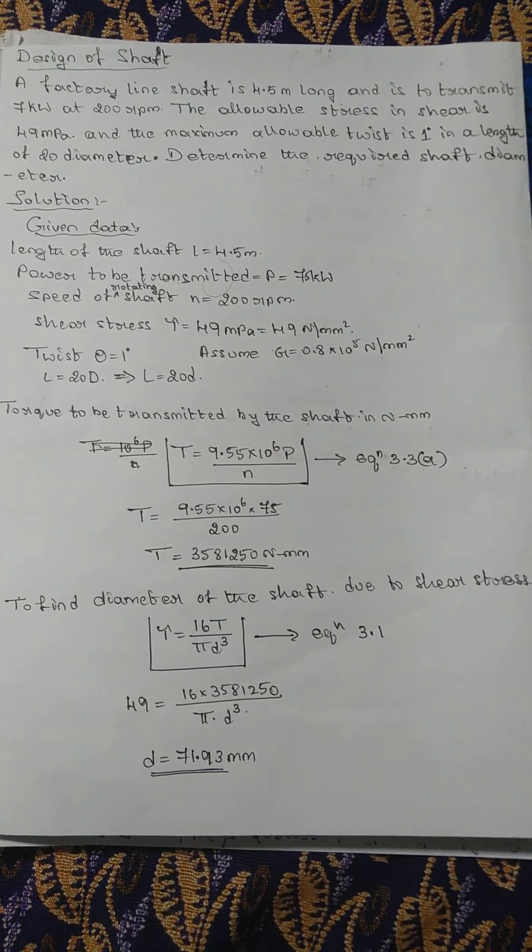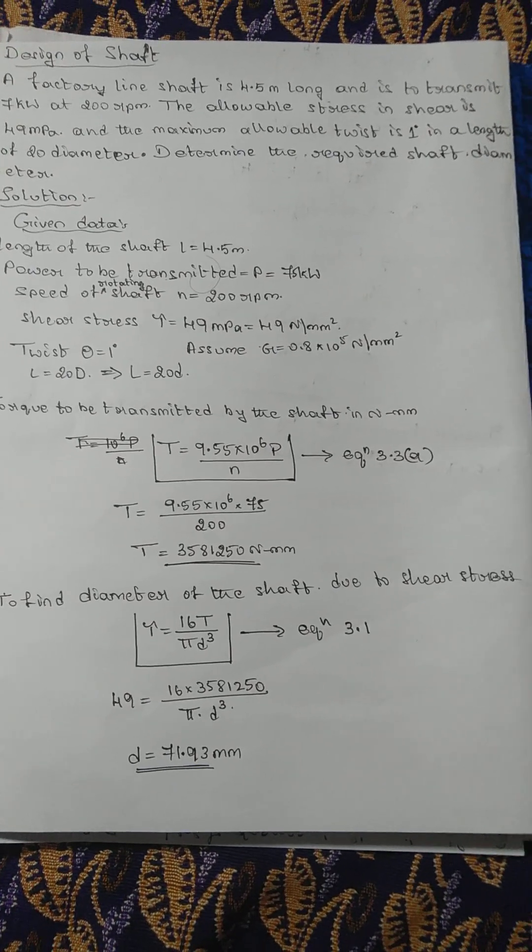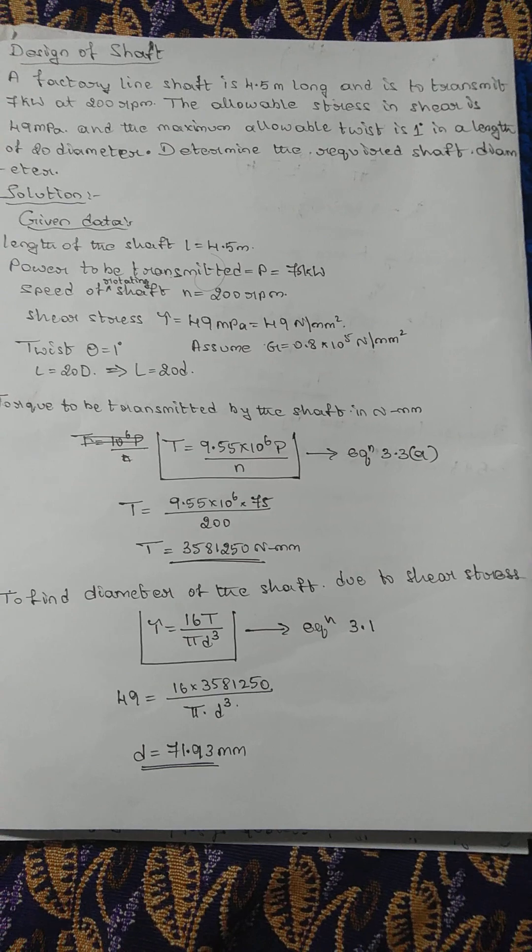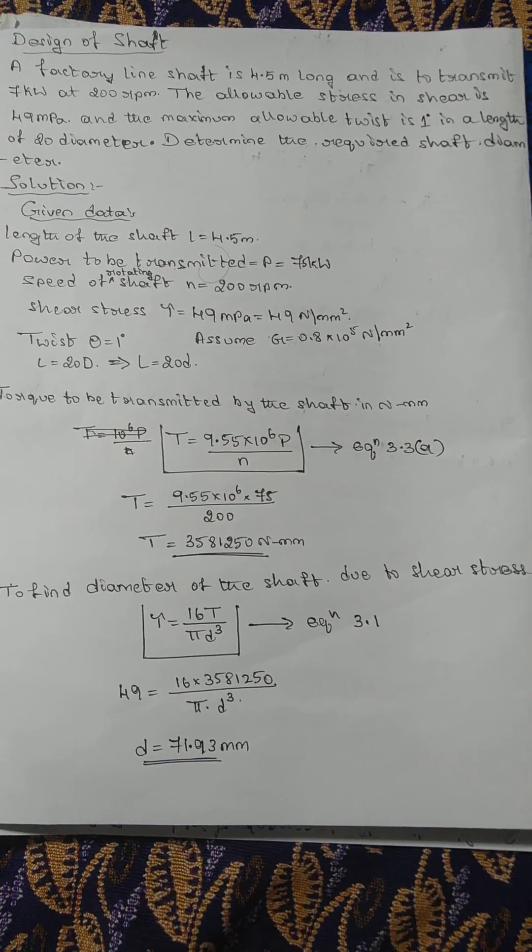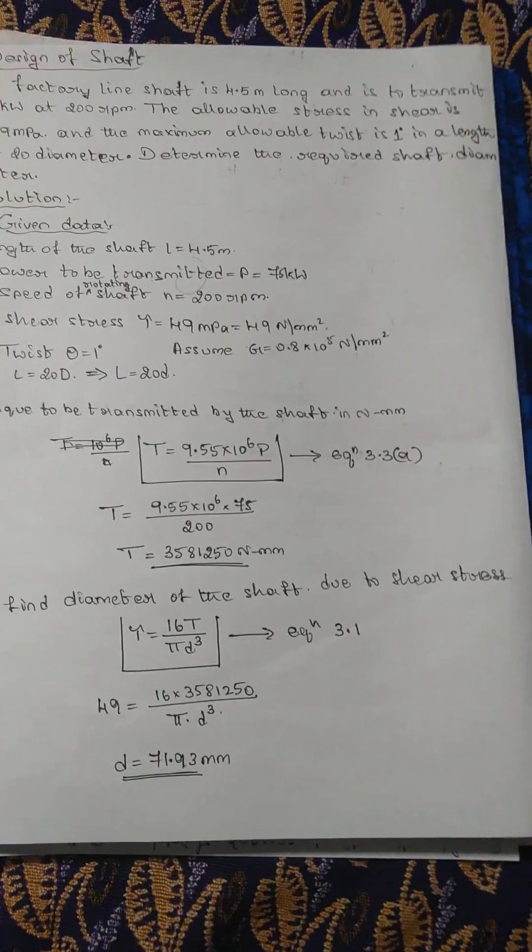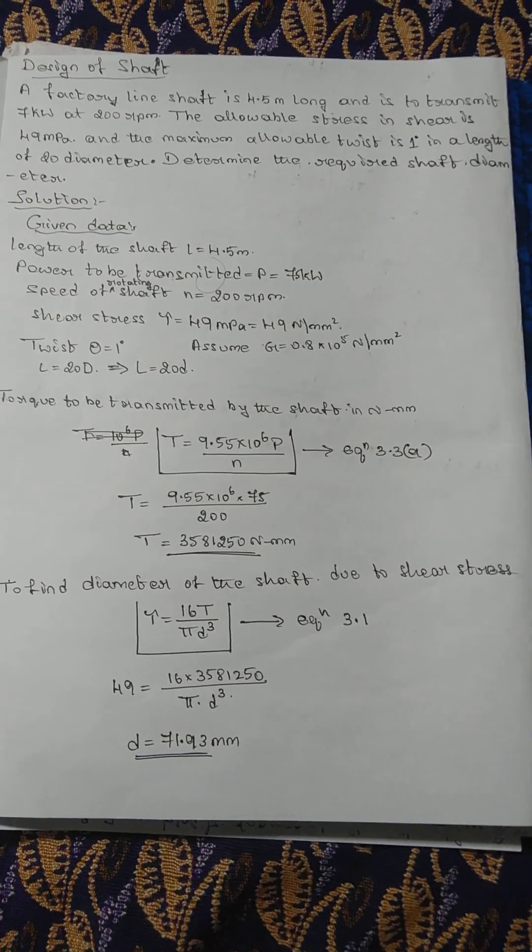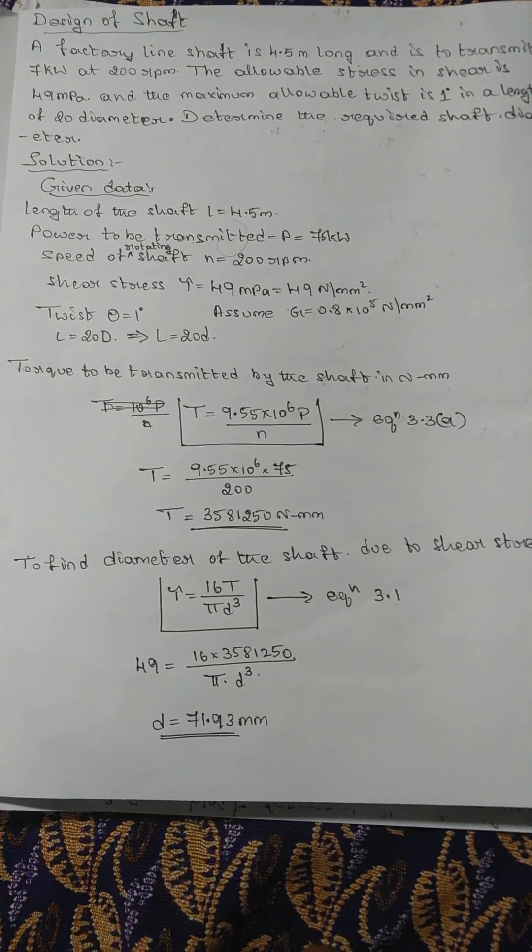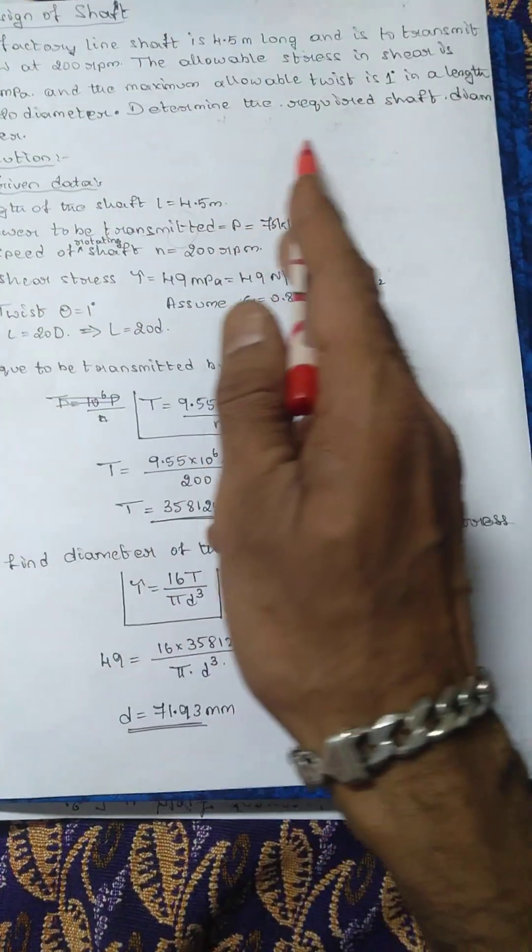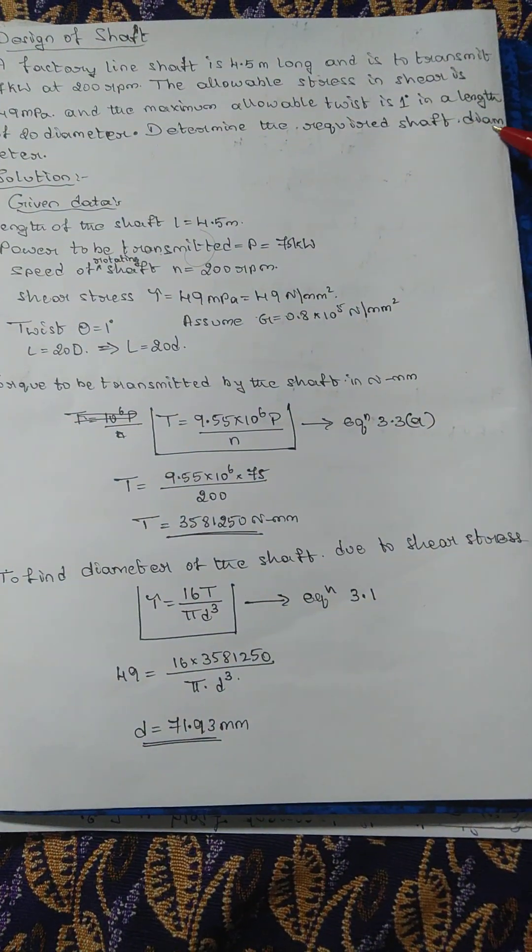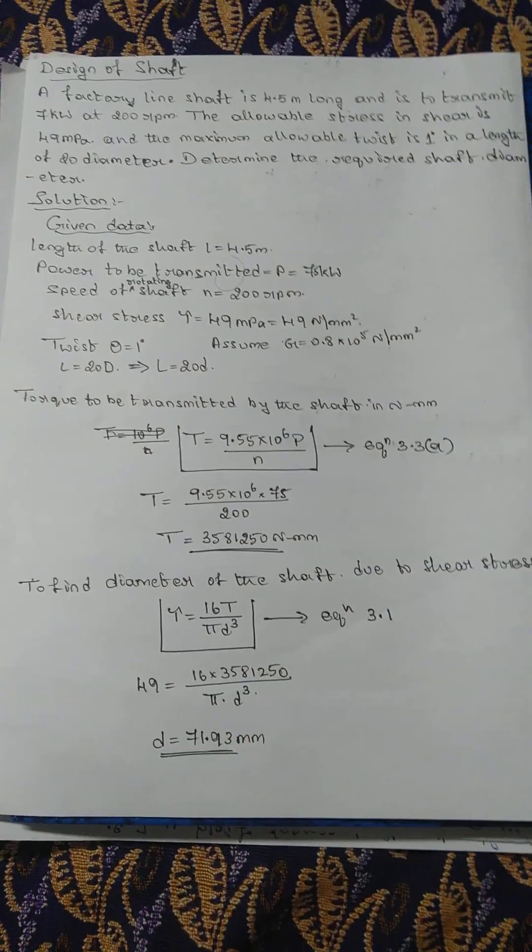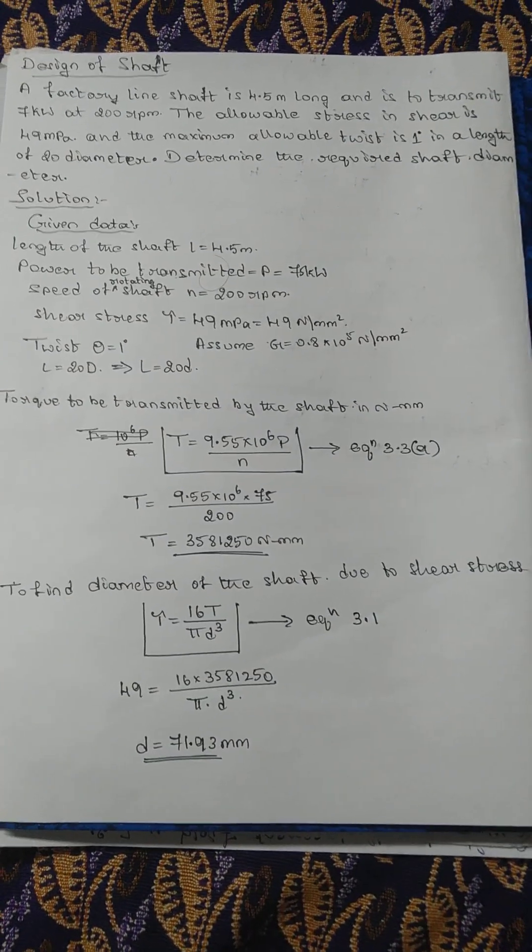The allowable stress in shear is 49 megapascals and the maximum allowable twist is 1 degree in a length of 20 diameters. Determine the required shaft diameter.